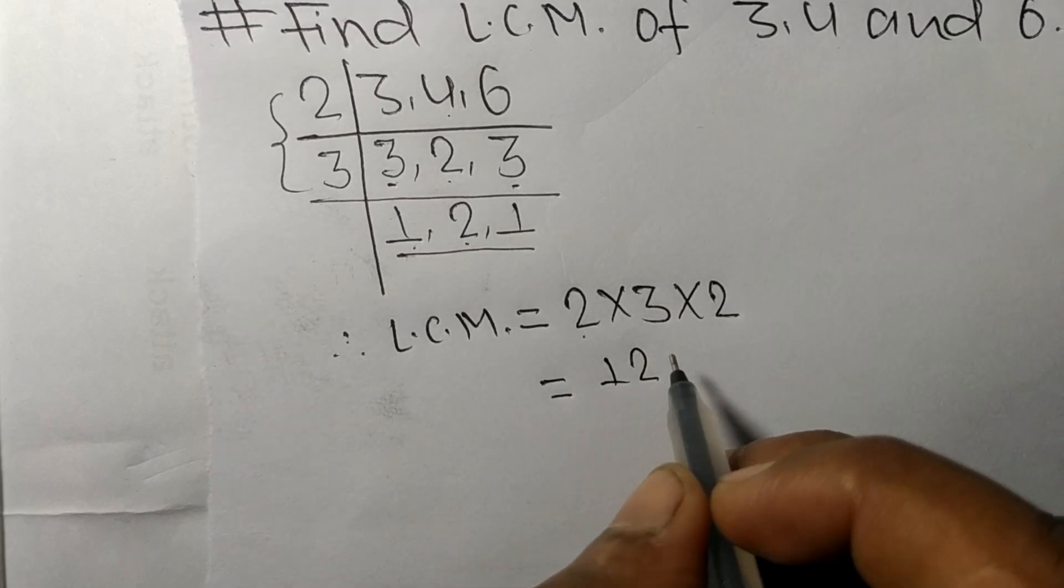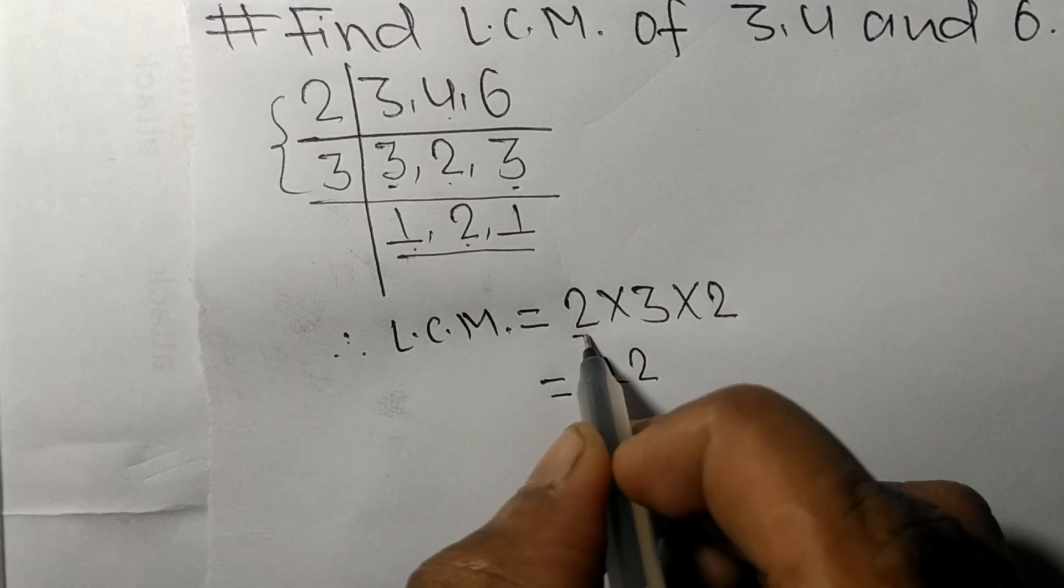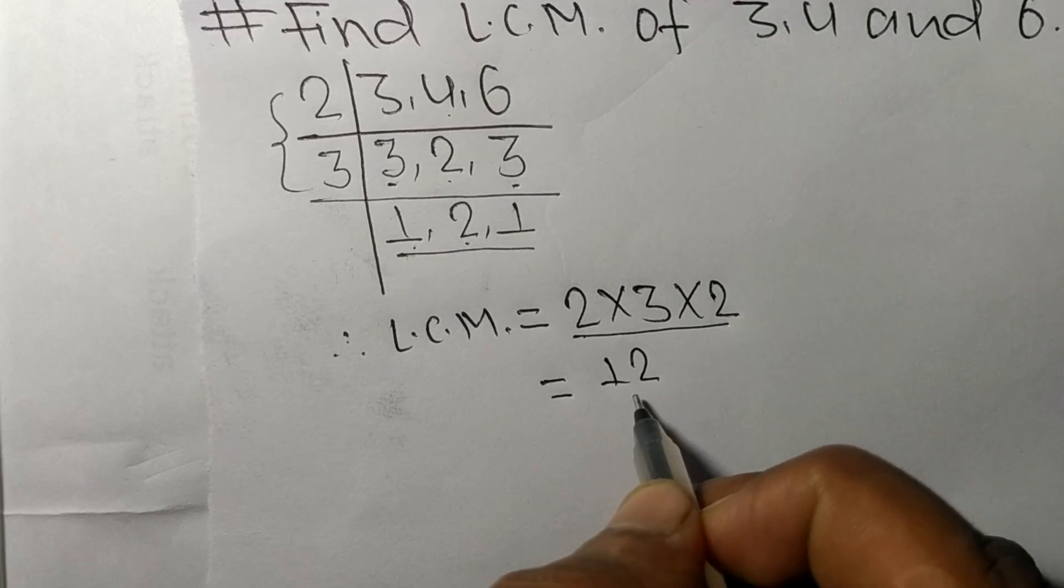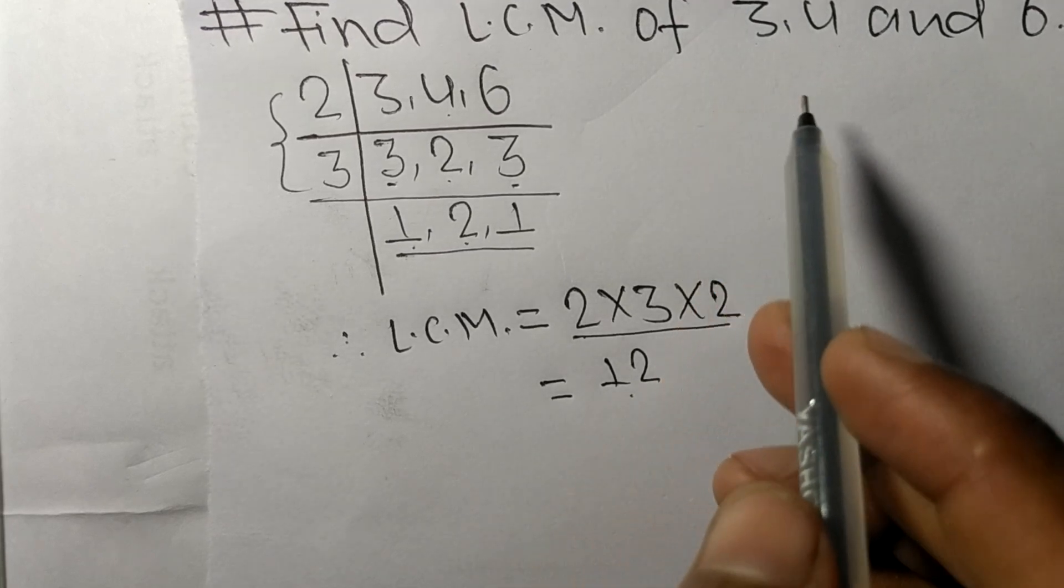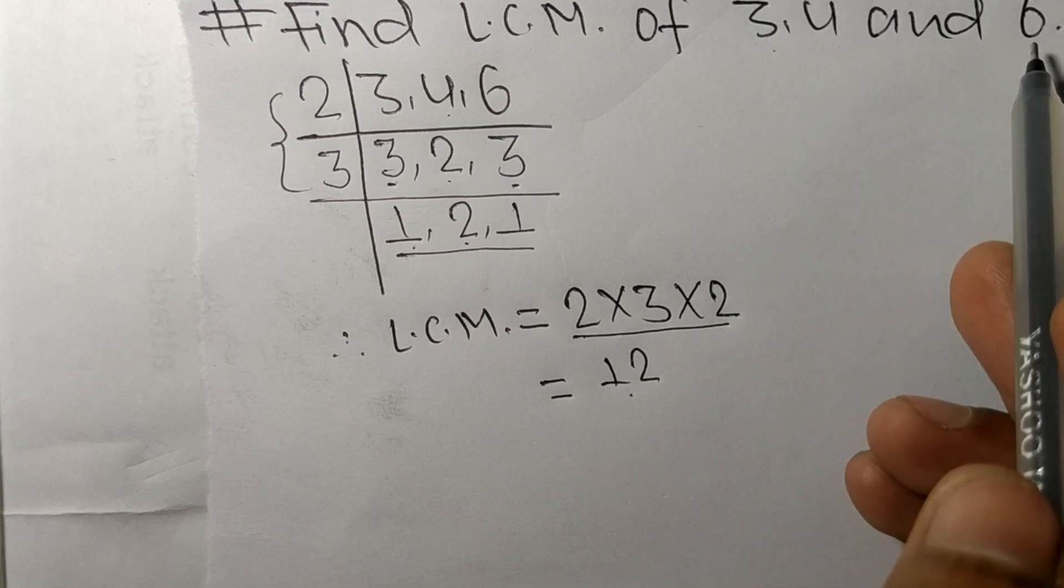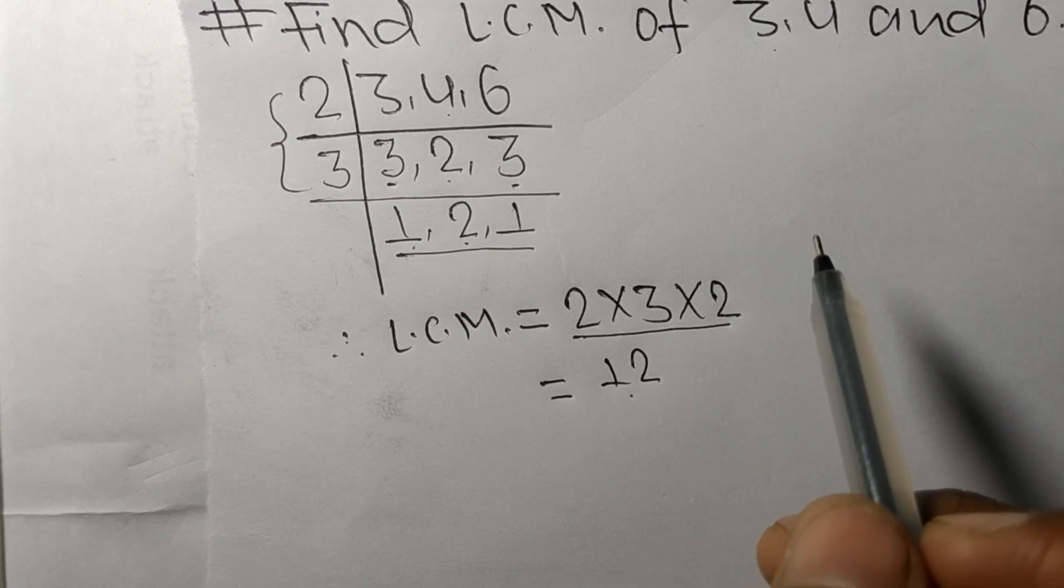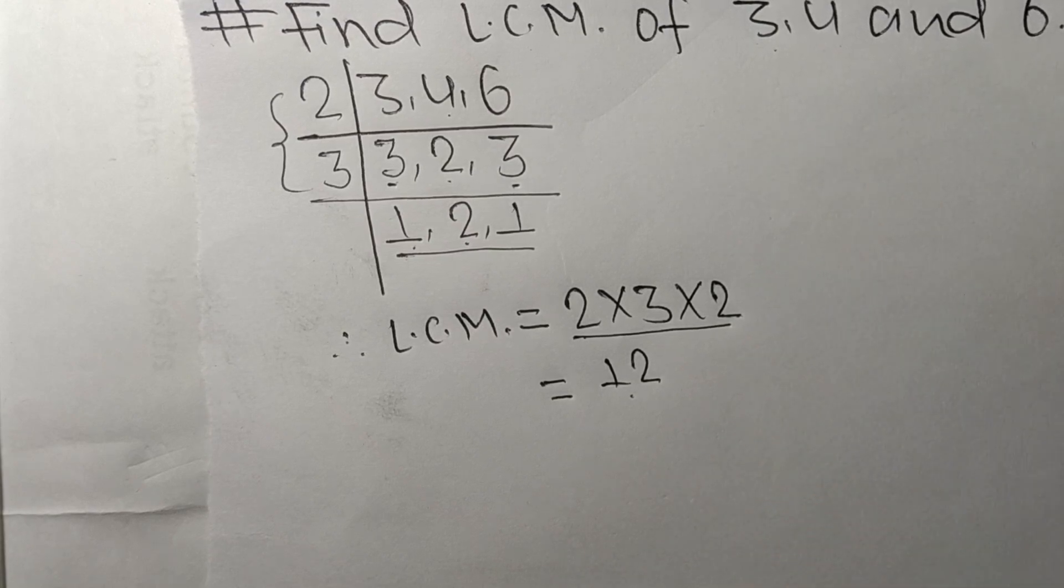means 12. So by multiplying all these numbers we got 12, so 12 is the LCM of 3, 4, and 6. So this much for today and thanks for watching.